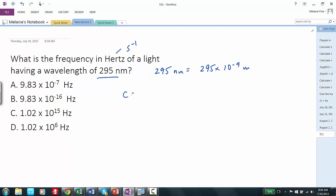Our equation is c equals nu lambda, where c is the speed of light, nu is the frequency we're trying to find, and lambda is the wavelength. The speed of light is 3 times 10 to the 8th meters per second.